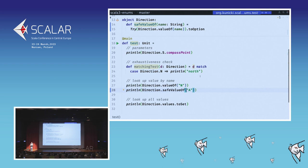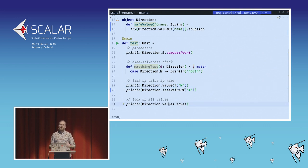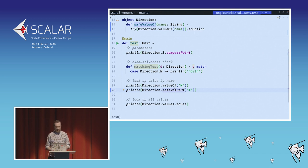Going through our checklist: we have parameters for internal state, exhaustiveness check at compile time, a way to find a value by name, and a way to find all values. The only thing missing that we needed to implement ourselves is a safe way to fetch a value by name — returning an Option instead of throwing an exception.